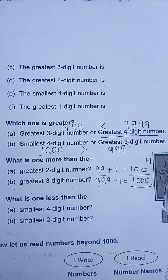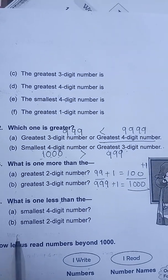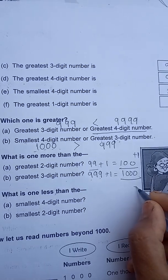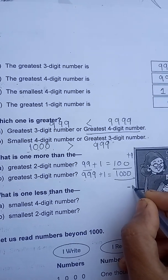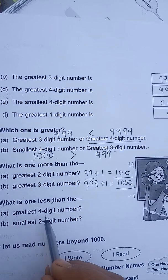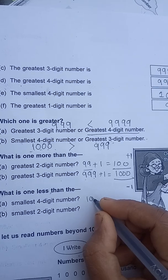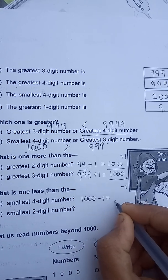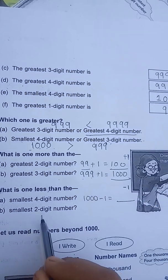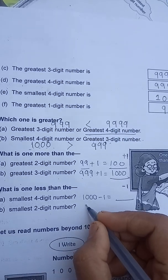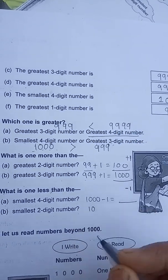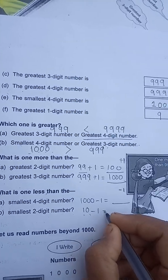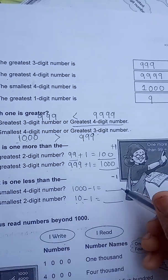What is one less than the smallest four-digit number? One less means you will have to subtract one. The smallest four-digit number is 1000. If you subtract one, what will you get? The smallest two-digit number is 10 — if you subtract one from that, what will you get?